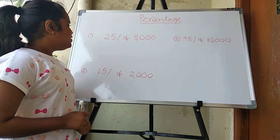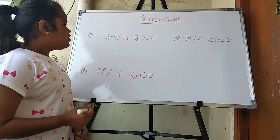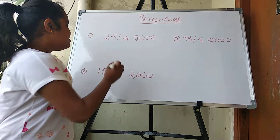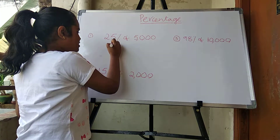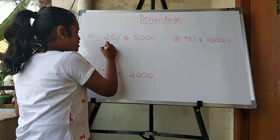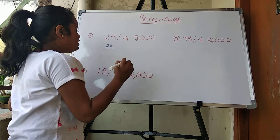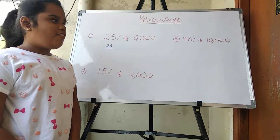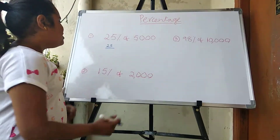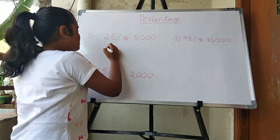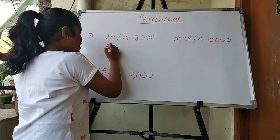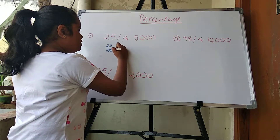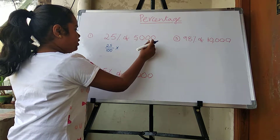So first, the example is 25% of 5,000. First we should keep 25. Always we should keep it over 100 for any number, whatever it is. So we should write 25 by 100, into 5,000.